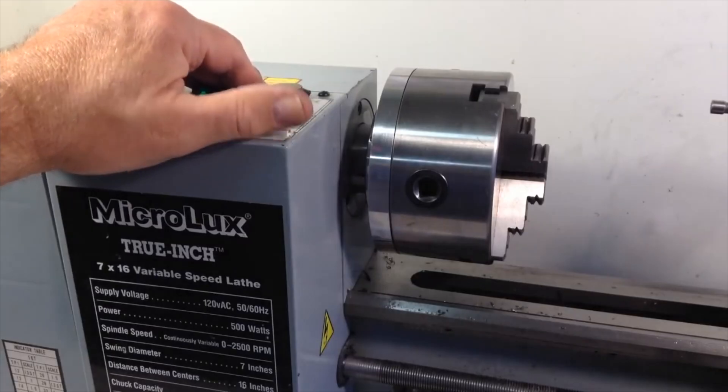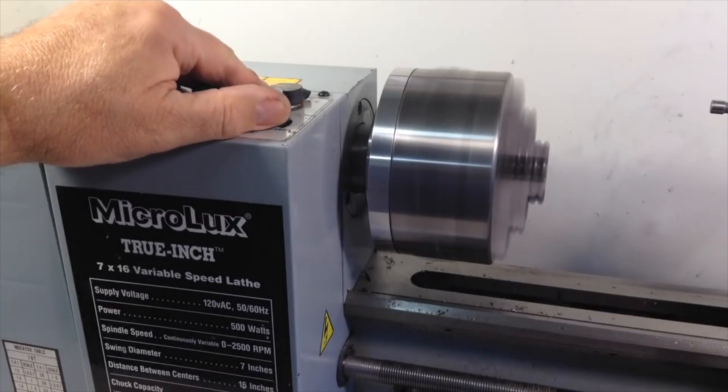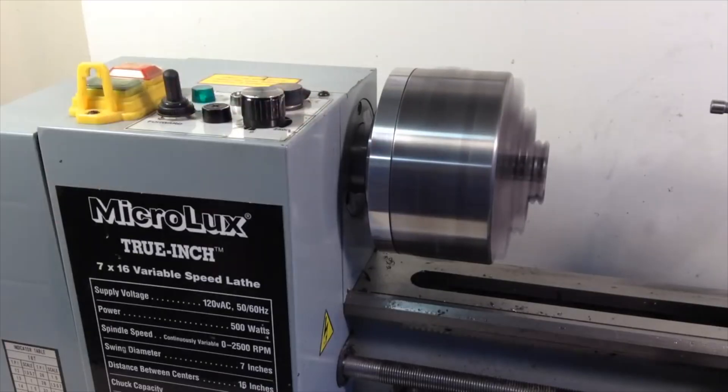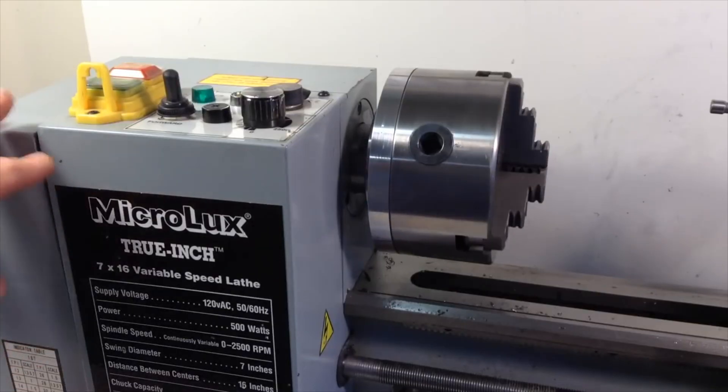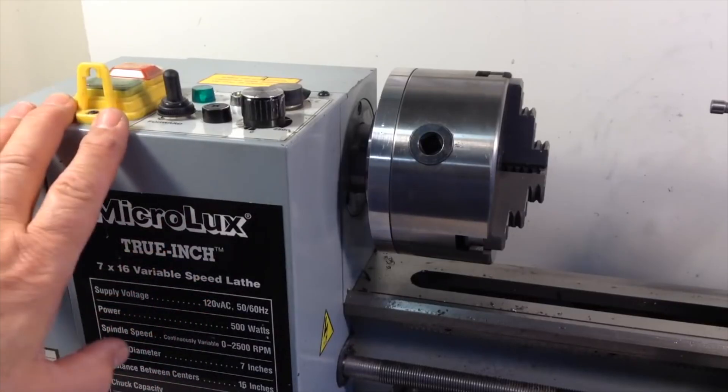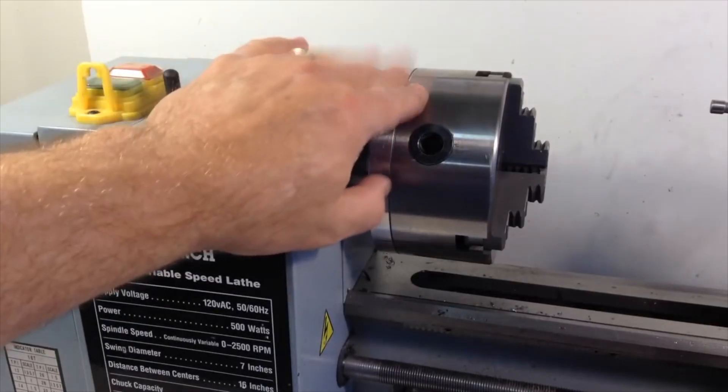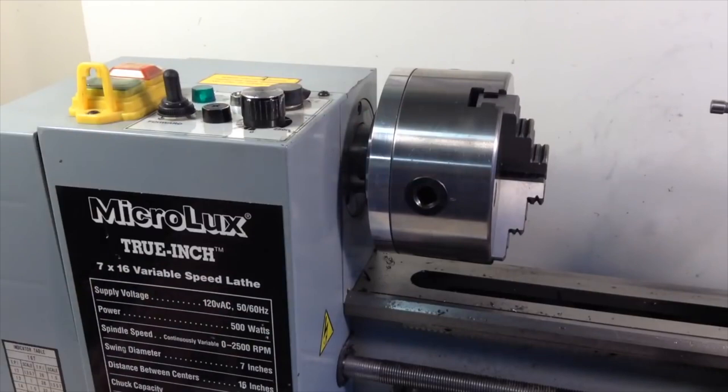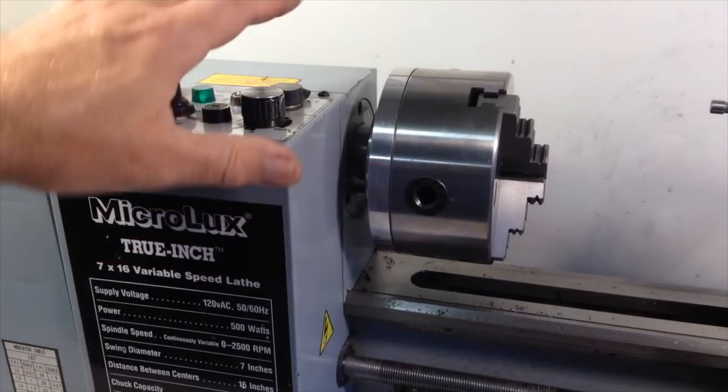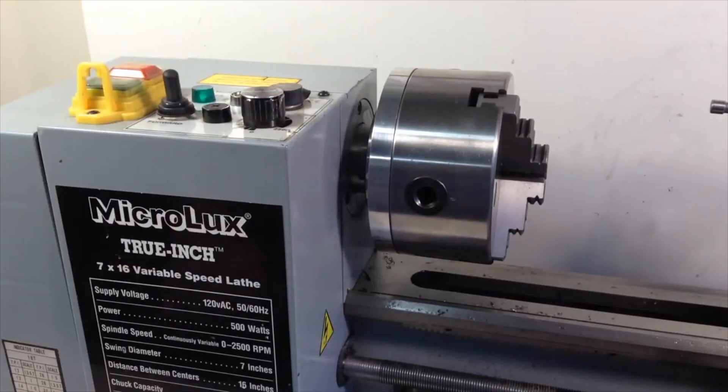Let's listen to this lathe by comparison. Well this is the Microlux 7x16. It's sold by Micromark, but it's essentially the same lathe as the other one. It's made in the same factory in China by Sieg, and it has the brushless DC motor, the same drivetrain. I do have a larger 5 inch chuck mounted on the spindle, but I don't think that's making any difference in terms of the noise we hear. I think the main difference for the lower noise level on this one is, number one, this machine is about 5 years old. So it's had plenty of time to wear in, the bearings are broken in, and I think that reduces the sound level somewhat.